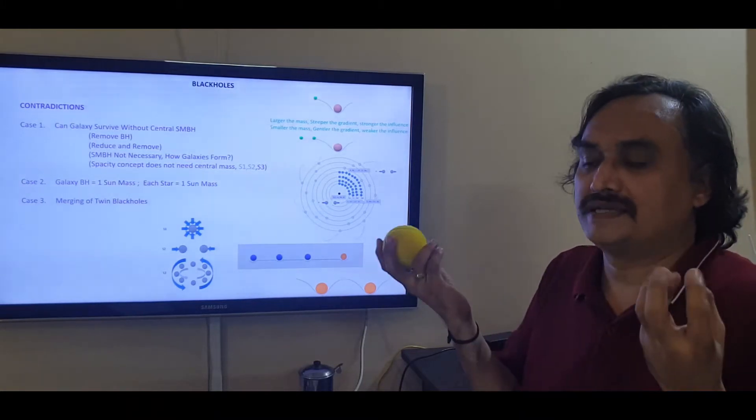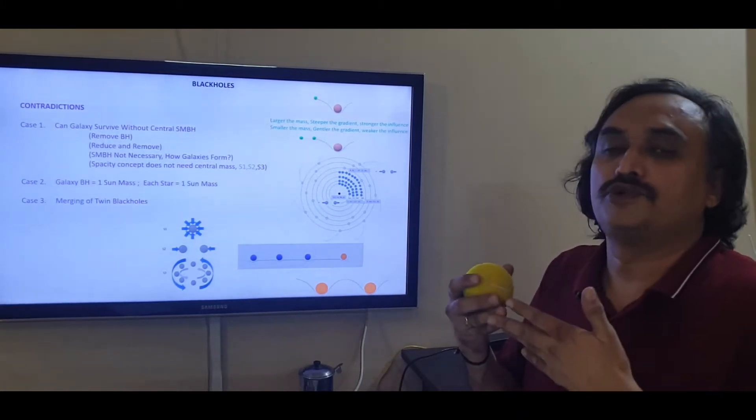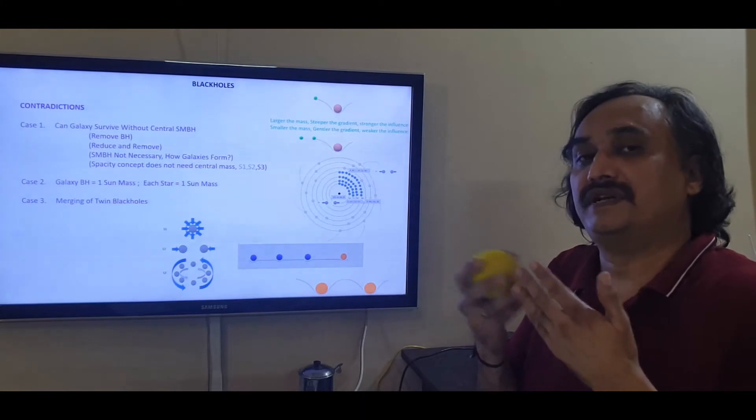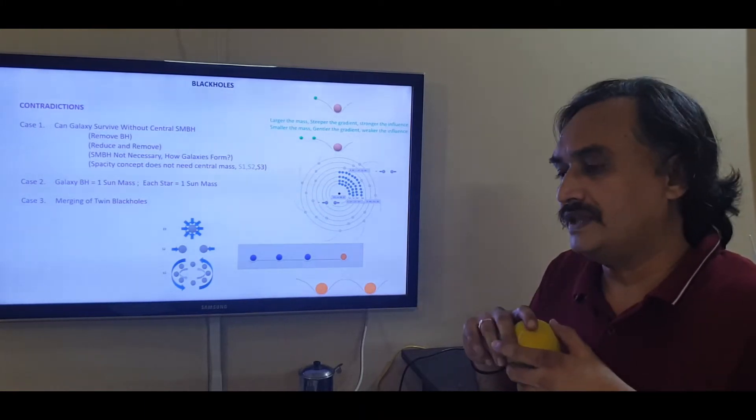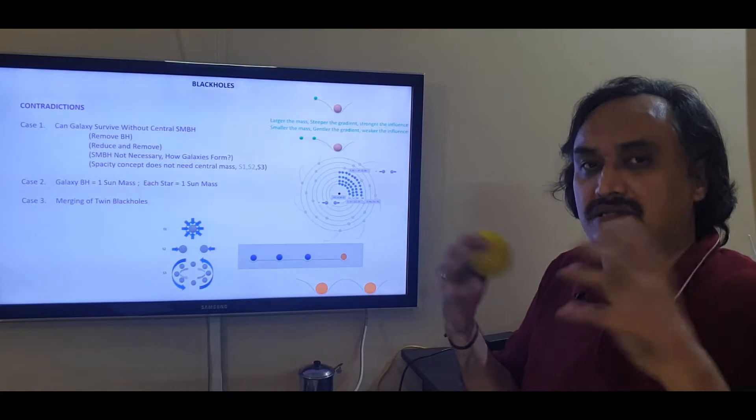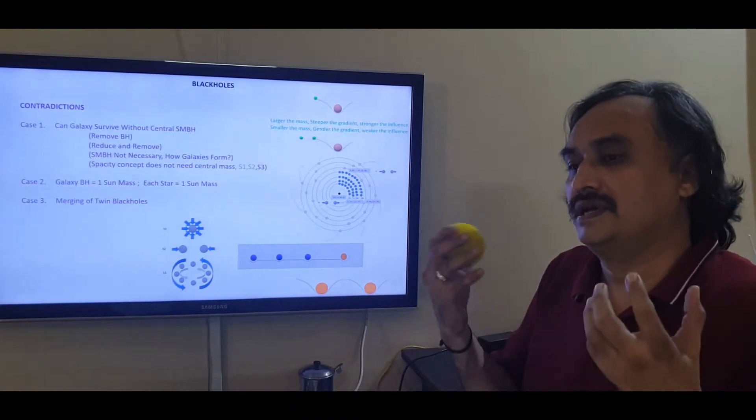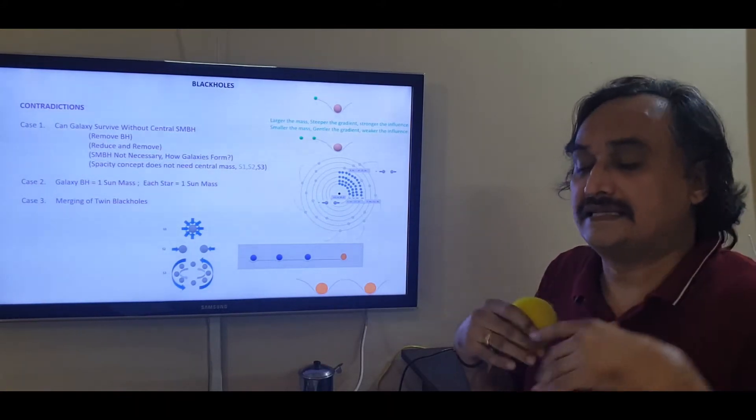Which is directly proportional to the two masses and inversely proportional to the square of the distance that separates it. So bigger the mass, the stronger the influence, and farther it is, lesser is the influence.